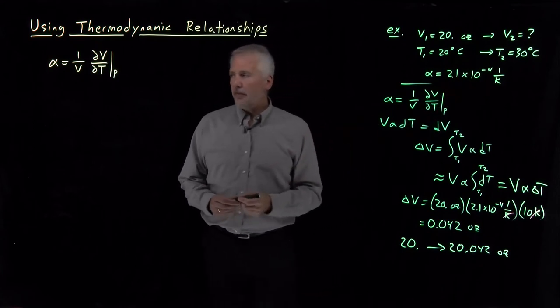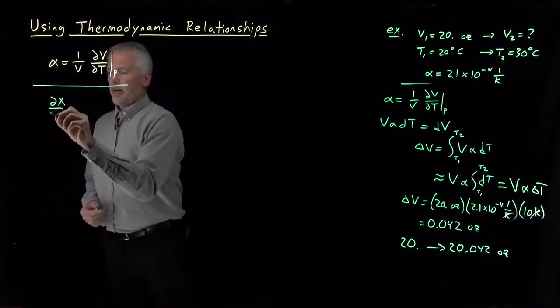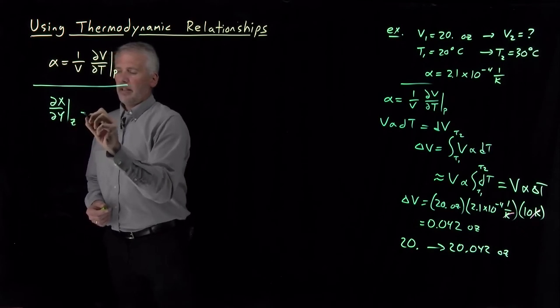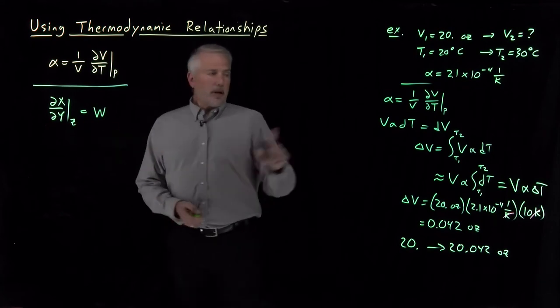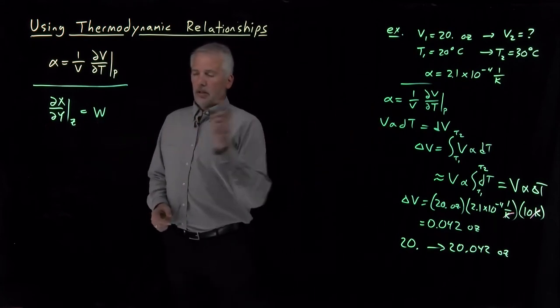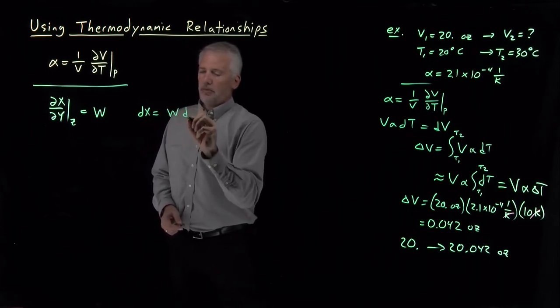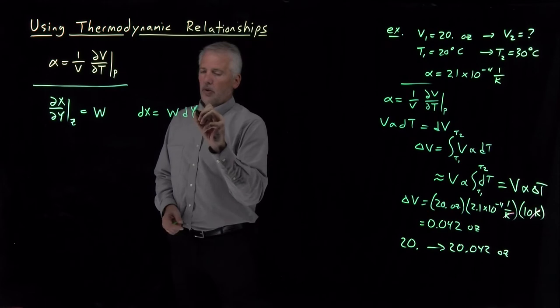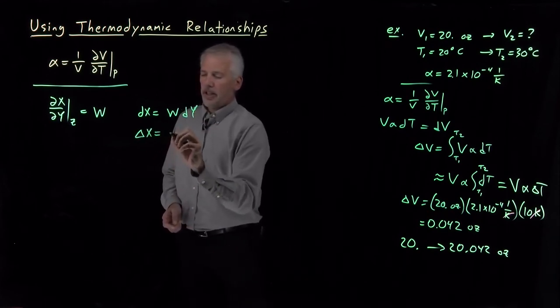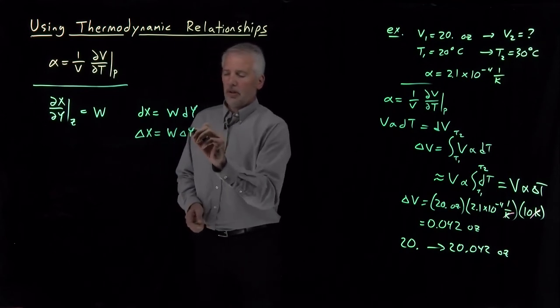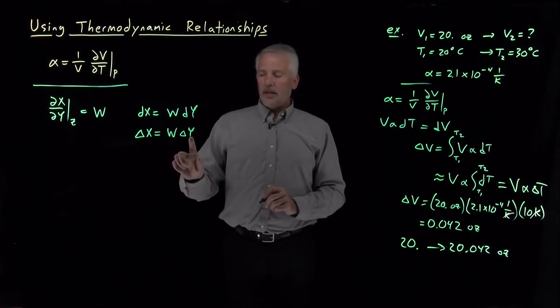That's very often how we use these derivatives. If we know dX dY at constant Z is equal to some numerical value, then by rearranging the equation, essentially the same way we did over here, then the change in X is going to be W times dY. For small changes, that's going to tell us roughly speaking change in X is W times the change in Y for a quantitatively finite change in delta X and delta Y.